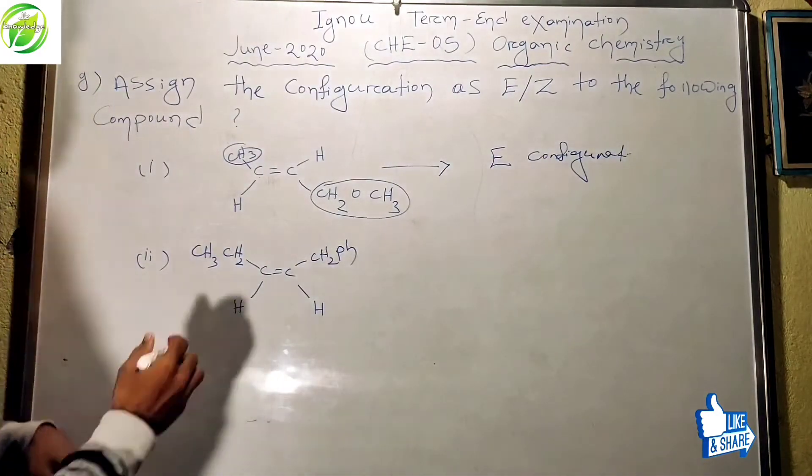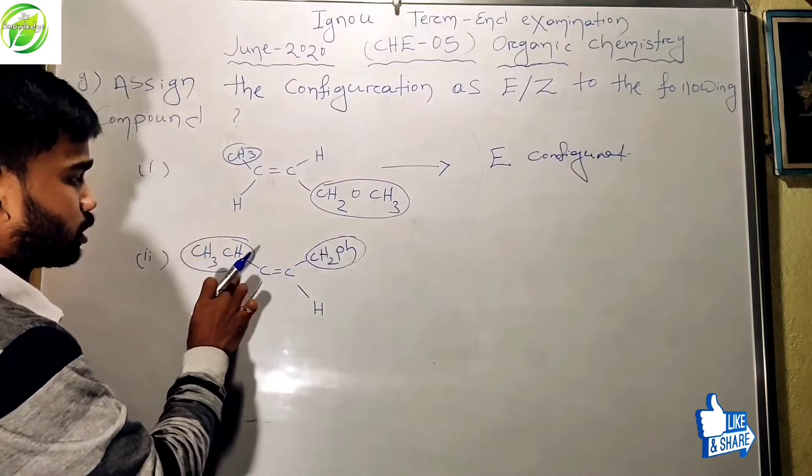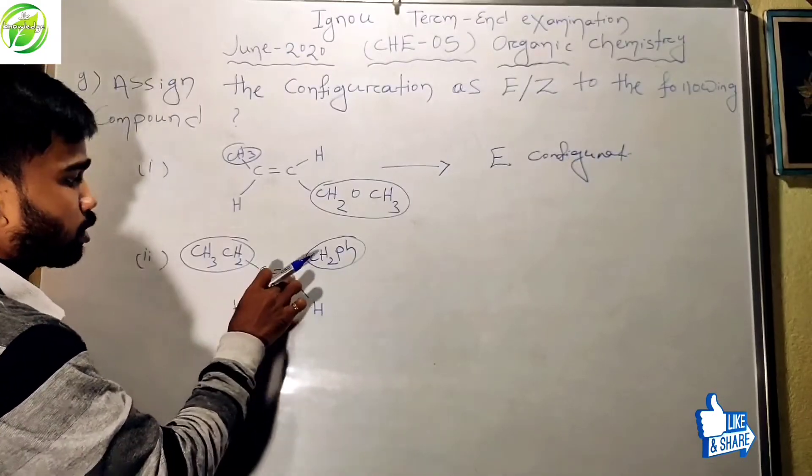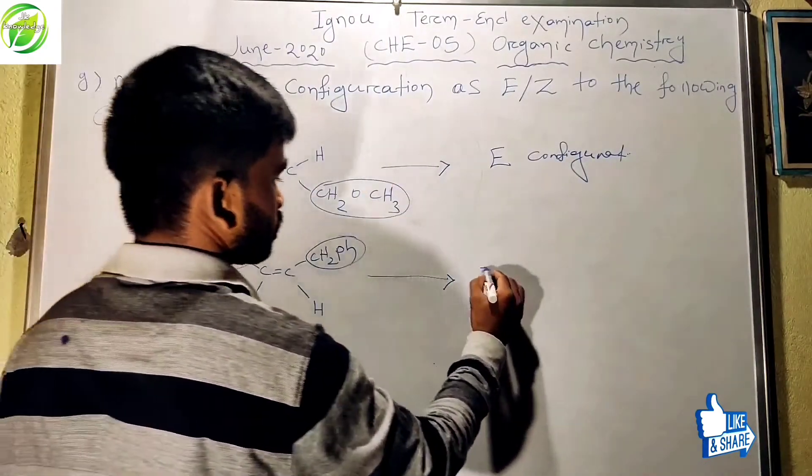But in this case, these two higher priority groups are present on one side of this carbon-carbon double bond. So the resultant configuration is Z configuration.